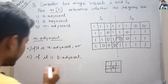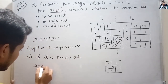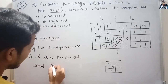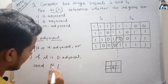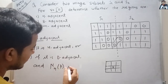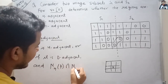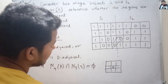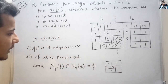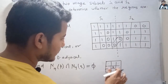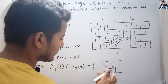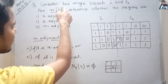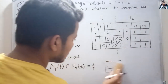When a pixel is not 4-adjacent, then for it to be M-adjacent it must be 8-adjacent and the N4 of P intersection N4 of Q should be equal to empty set. This will depend on the value of V.